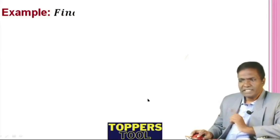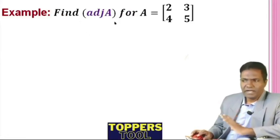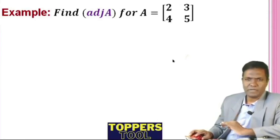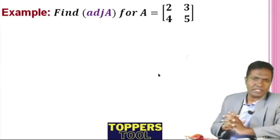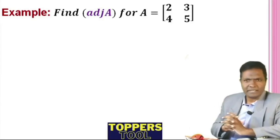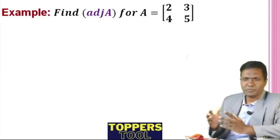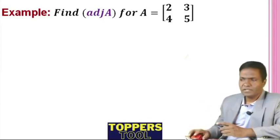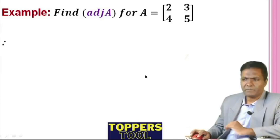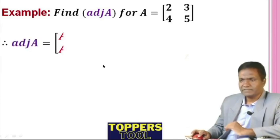See here one example: find the adjoint of A for a given 2×2 matrix. There is one shortcut — you can write it directly. But first, conceptually, let us find the cofactors.